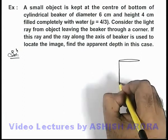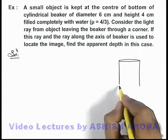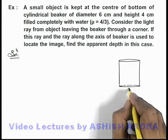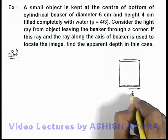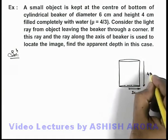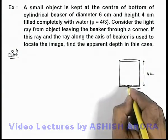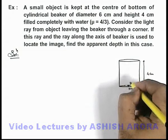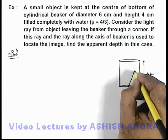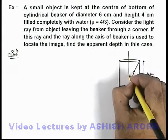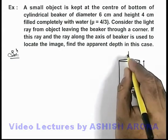Now, if we draw the situation, we are given a cylindrical beaker with diameter 6 centimeter, meaning radius 3 centimeter, and height 4 centimeter. An object is kept at the bottom of this cylindrical beaker. We need to consider a light ray from the object passing through the corner, and another light ray passing along the axis of this beaker.